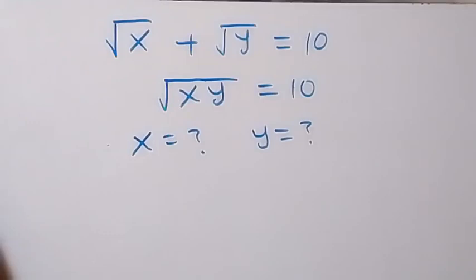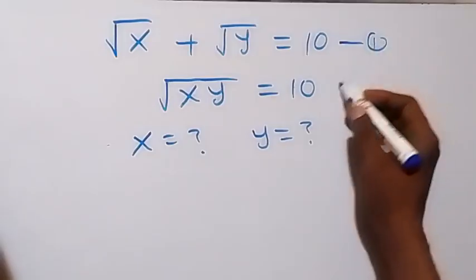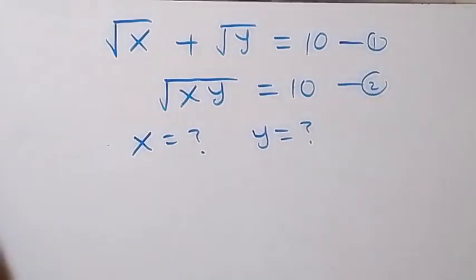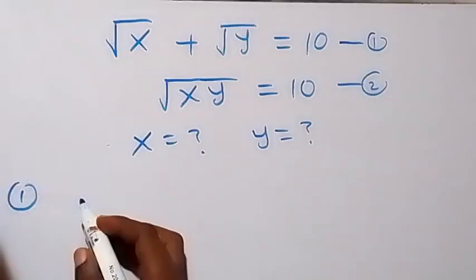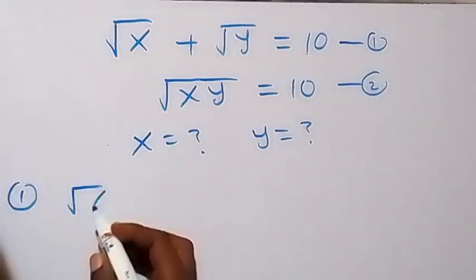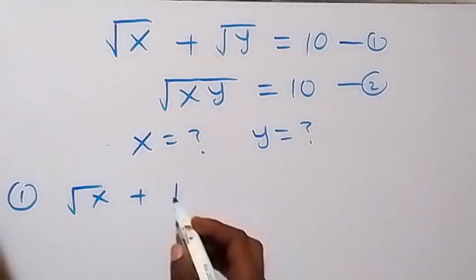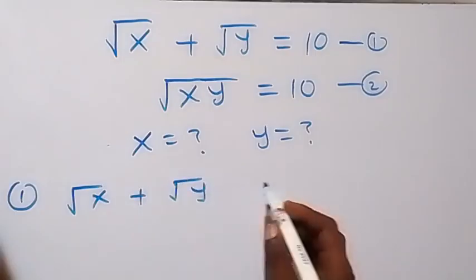Hello, you are welcome. How to solve for x and y in this system of equations. From here, let's divide this as equation 1 and this as equation 2. And from equation 1, we have root x plus root y equals to 10.